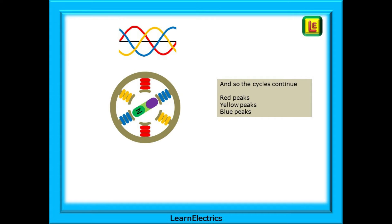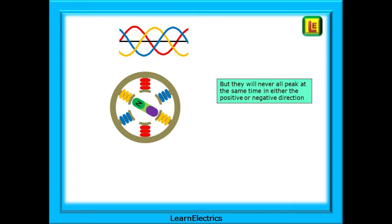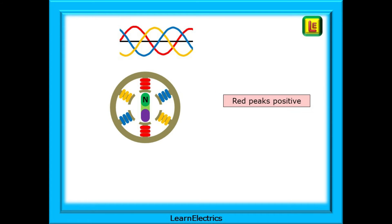And so the cycles continue. The red peaks, the blue peaks and the yellow peaks. And it all repeats. But they will never all peak at the same time in either the positive or negative direction. Now red peaks positive again, and then blue peaks negative, followed by yellow peaking positive, and red peaks in the negative direction. Blue peaks positive, and so on.